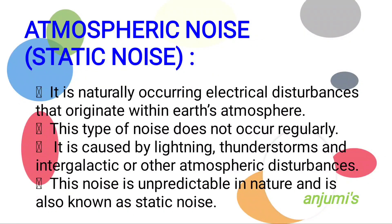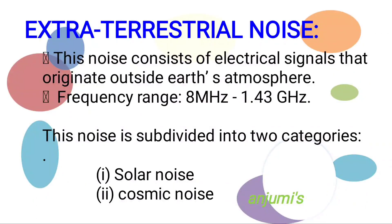Atmospheric noise, or static noise, consists of naturally occurring electrical disturbances that originate within Earth's atmosphere. This type of noise does not occur regularly. It is caused by lightning, thunderstorms, and intergalactic or other atmospheric disturbances. This noise is unpredictable in nature and is also known as static noise.